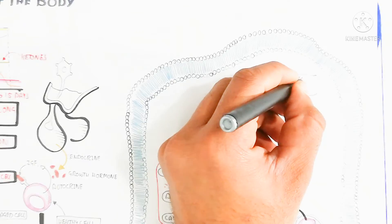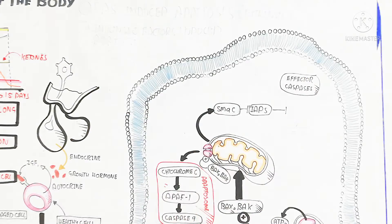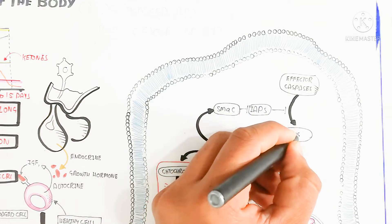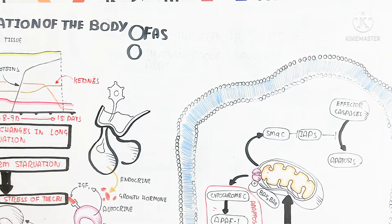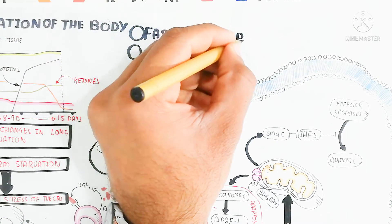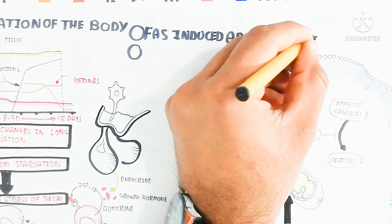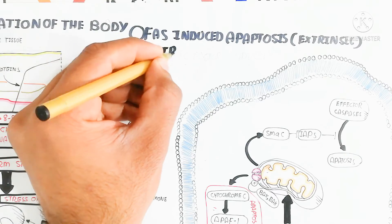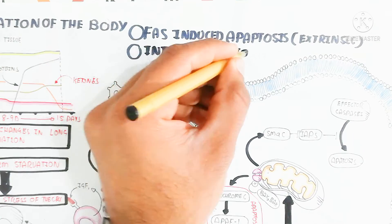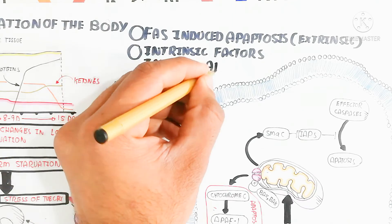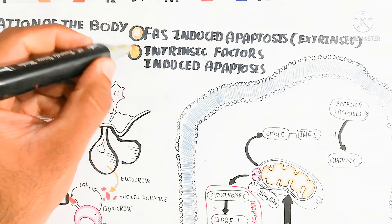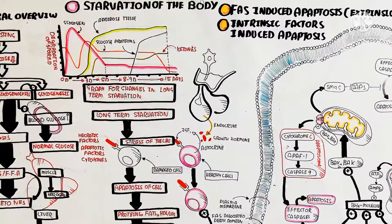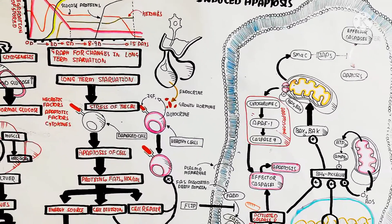Additionally, SMAC and IAPs regulate this process: IAPs inhibit effector caspases, preventing apoptosis, but SMAC inhibits IAPs, so the inhibition is removed and the cell dies. To summarize: apoptosome formation occurs through cytochrome C complexing with APAF-1, which then recruits and activates caspase 9 to drive effector caspase activation. This is the intrinsic apoptosis pathway, as opposed to the extrinsic pathway described earlier.